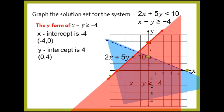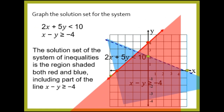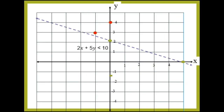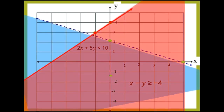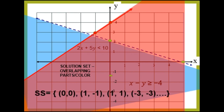This is the graph for x − y ≥ −4. Observe the graph: the solution set of the system is the region shaded both red and blue, including part of the line x − y ≥ −4. The graph for 2x + 5y < 10 and the graph for x − y ≥ −4 overlap. The solution set includes the overlapping ordered pairs such as (0, 0), (1, −1), (1, 1), (−3, −3), and so on.